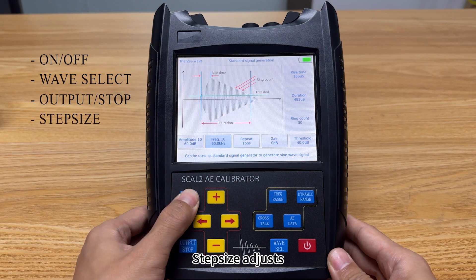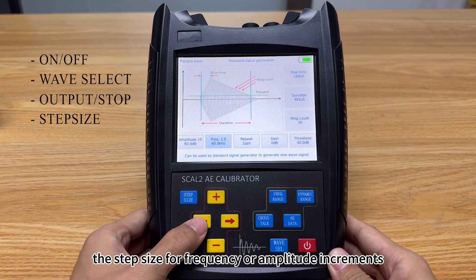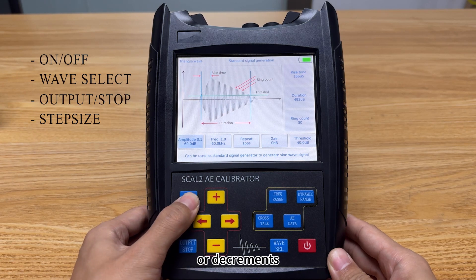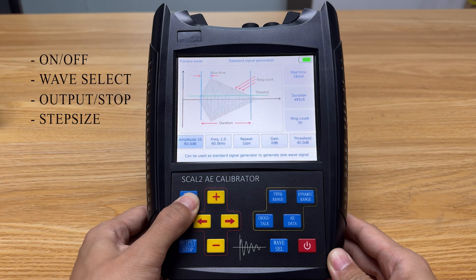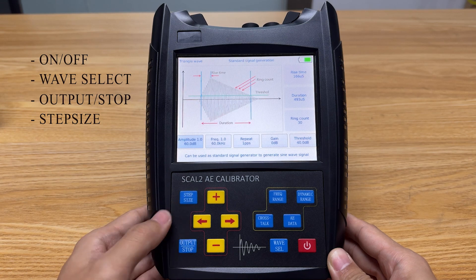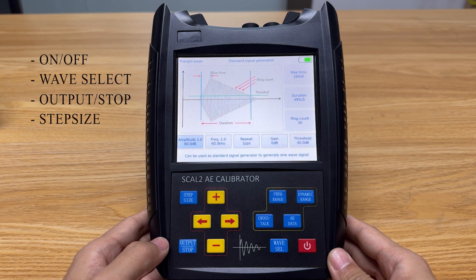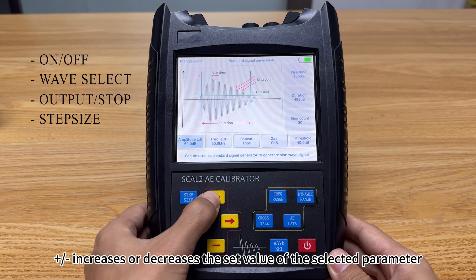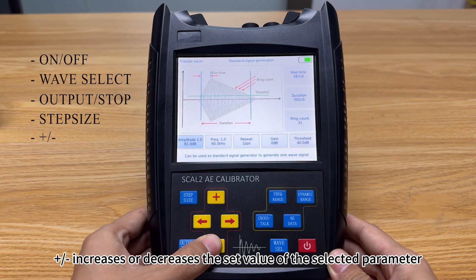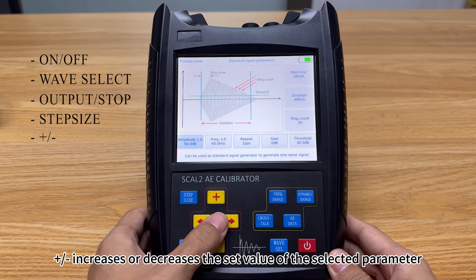Step size adjusts the step size for frequency or amplitude increments or decrements. Plus and minus increases or decreases the set value of the selected parameter.